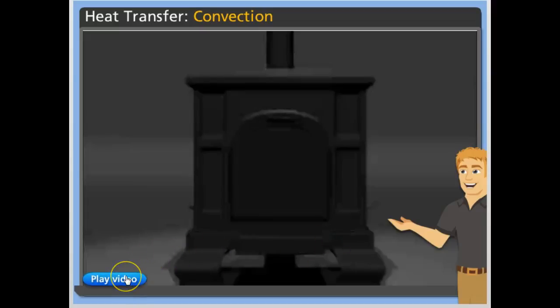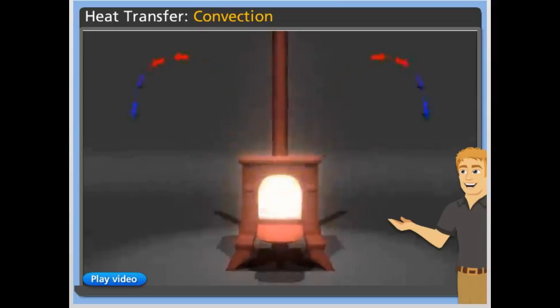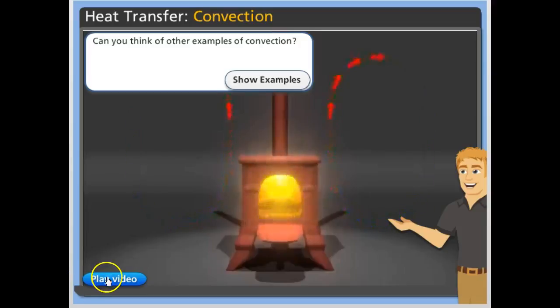Convection is the up and down movement of gases and liquids caused by heat transfer. As a gas or liquid is heated, it warms, expands, and rises because it is less dense. When the gas or liquid cools, it becomes more dense and falls.